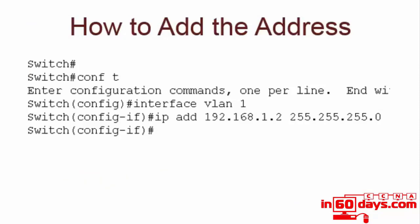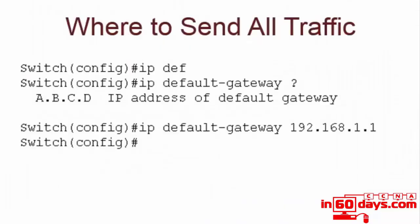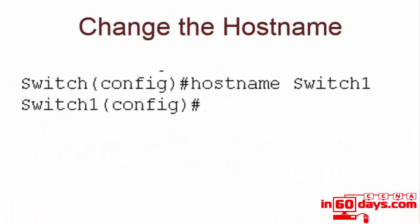To add an IP address: enter 'config t' and then create 'interface VLAN 1' — this is known as a switched virtual interface (SVI). You can't physically point to it, but any interface in that VLAN has this IP address designated to it. Note: using VLAN 1 isn't recommended for switch security, but this illustrates the concept. To set a default gateway, use 'ip default-gateway' followed by the IP address, such as 192.168.1.1. To change the hostname, use the hostname command the same as on a router.